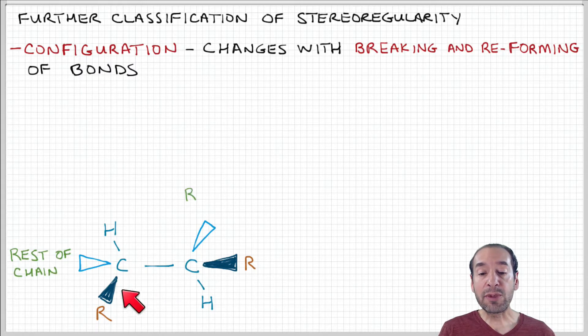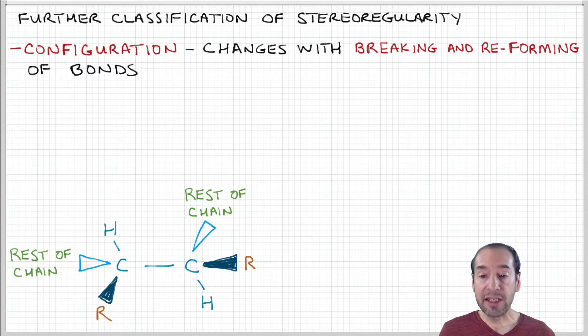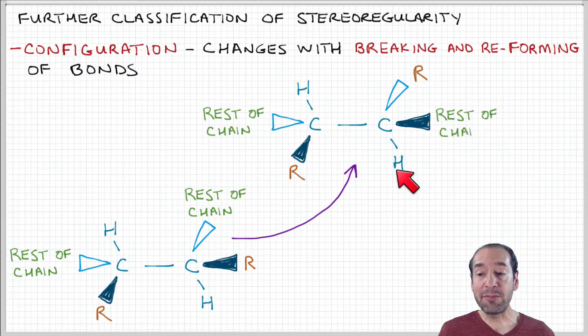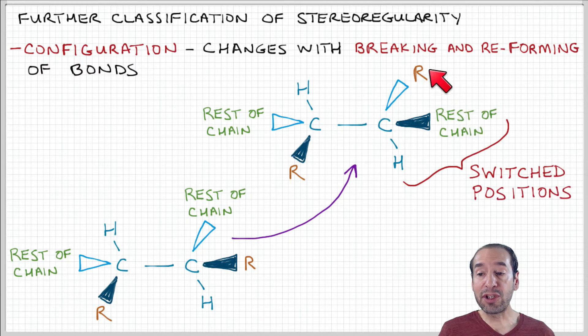So I start with the same arrangement here on the left-hand side. But now, I can imagine a variation where this hydrogen is in the same position. But now, I've switched the positions of these groups, this side group and the rest of the chain. So this is not a rotational arrangement. This is actually swapping of the locations of these two components.